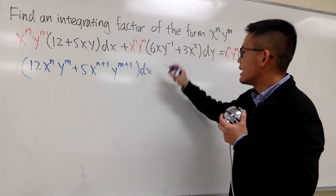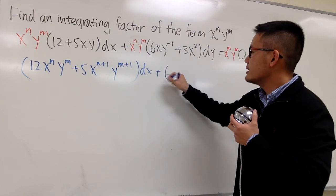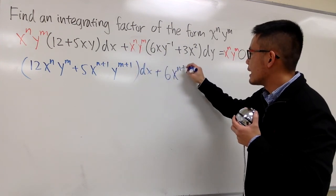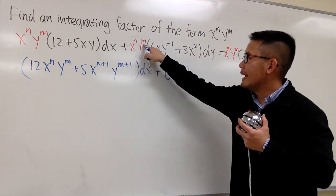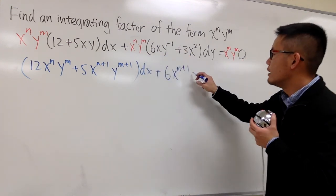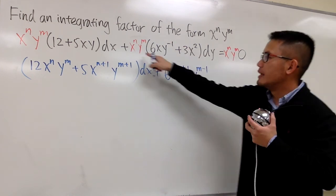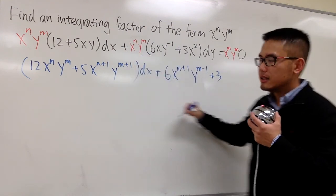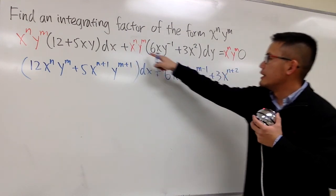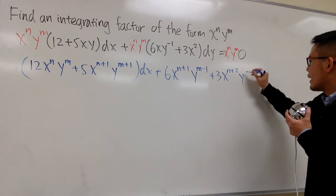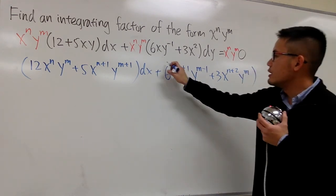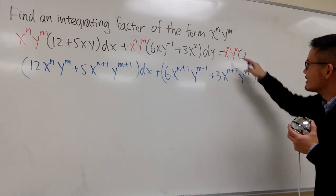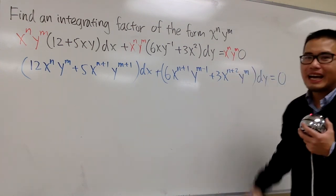Next, we take this times that and add it with 6: x to the n power gives x to the n plus 1. And then y to the n times y to the negative 1, so we get y to the n minus 1. Then this times that adds a 3: x squared times that is x to the n plus 2, and y to the n. This is for the dy term. And this times that is still 0.